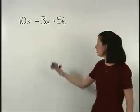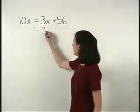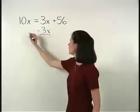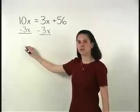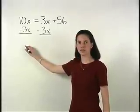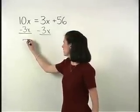Well, notice that if we subtract 3x from both sides of the equation, on the left side, 10x minus 3x simplifies to 7x,